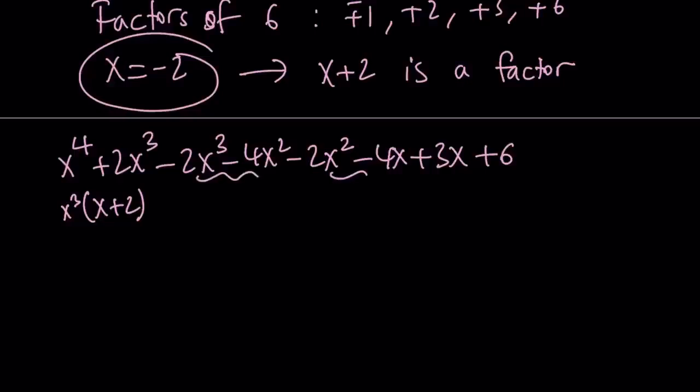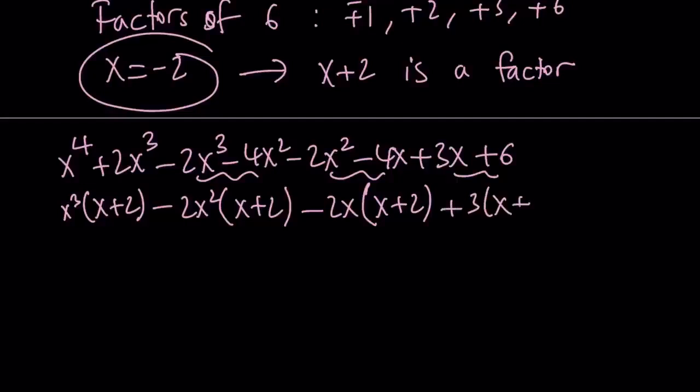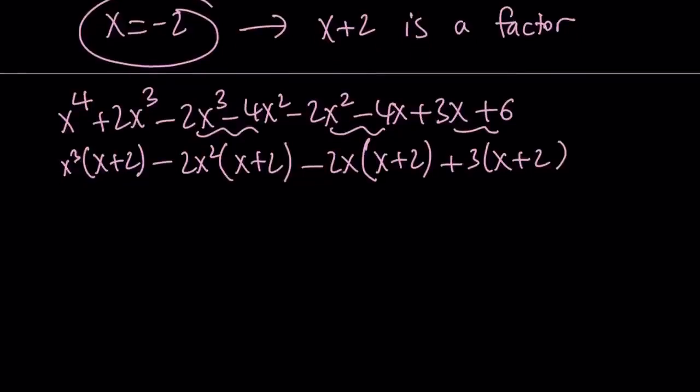Now we're going to be grouping these. So these 2, these 2, and these 2. This is going to be negative 2x squared times x plus 2. This is negative 2x times x plus 2. And this is 3 times x plus 2. If you do this correctly, you're going to get a common factor. So x plus 2, we can take out and get x cubed minus 2x squared minus 2x plus 3.